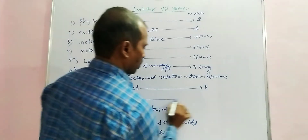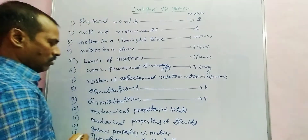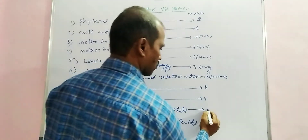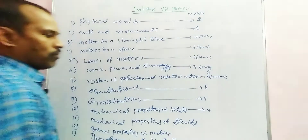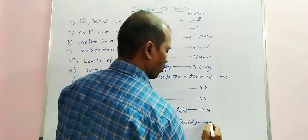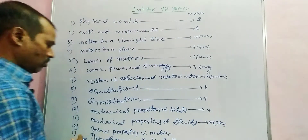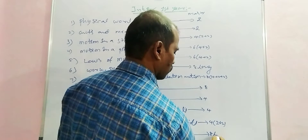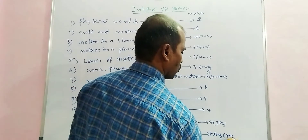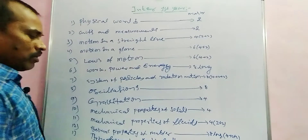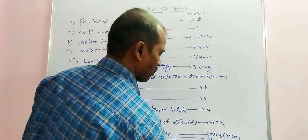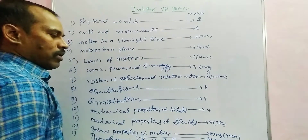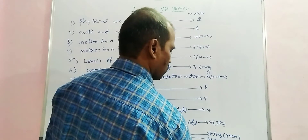Gravitation carries 4 marks. Mechanical Properties of Solids carries 4 marks. Mechanical Properties of Fluids carries 4 marks — that is 2 plus 2. Thermal Properties of Matter carries 8 marks as a long answer — 4 plus 2 plus 2. Thermodynamics also carries 8 marks — 4 plus 2 plus 2. Kinetic Theory of Gases carries 4 marks, which is 2 plus 2.